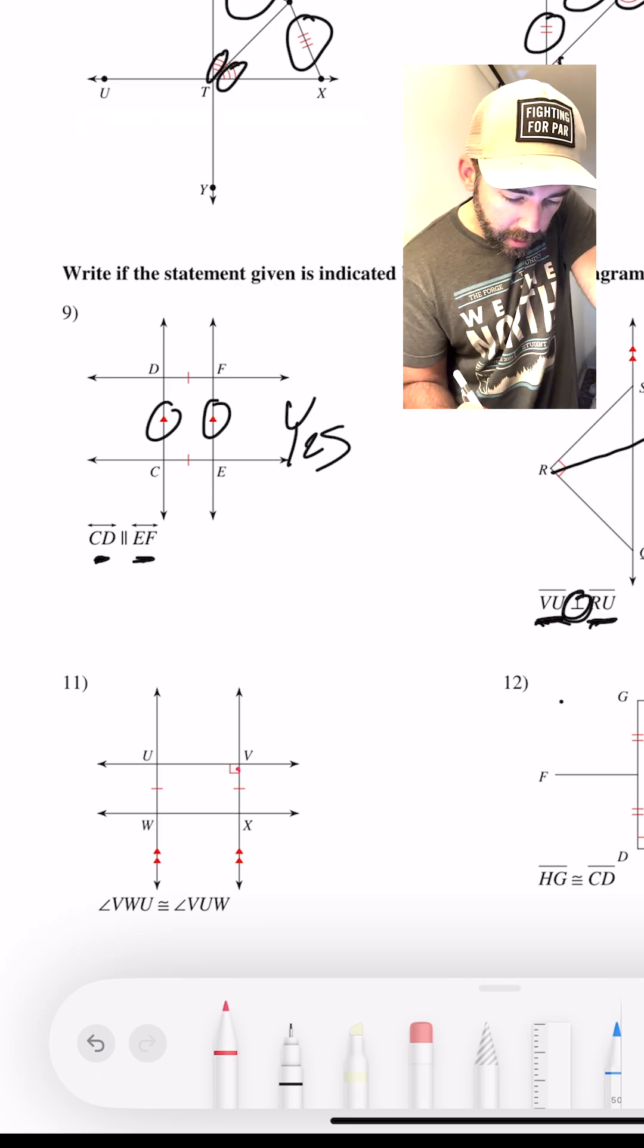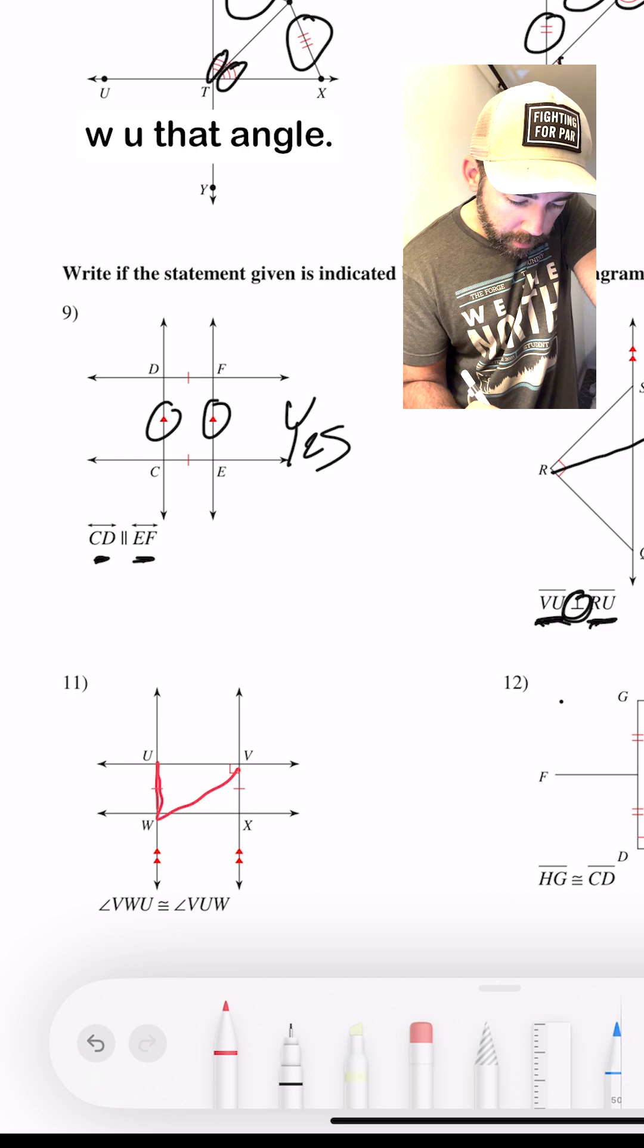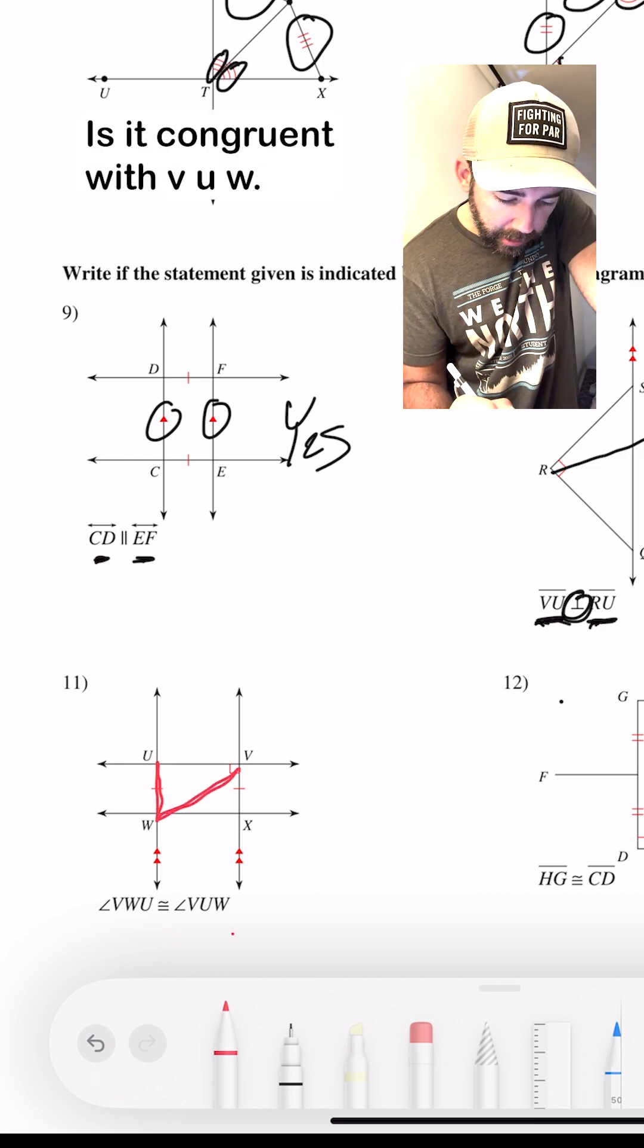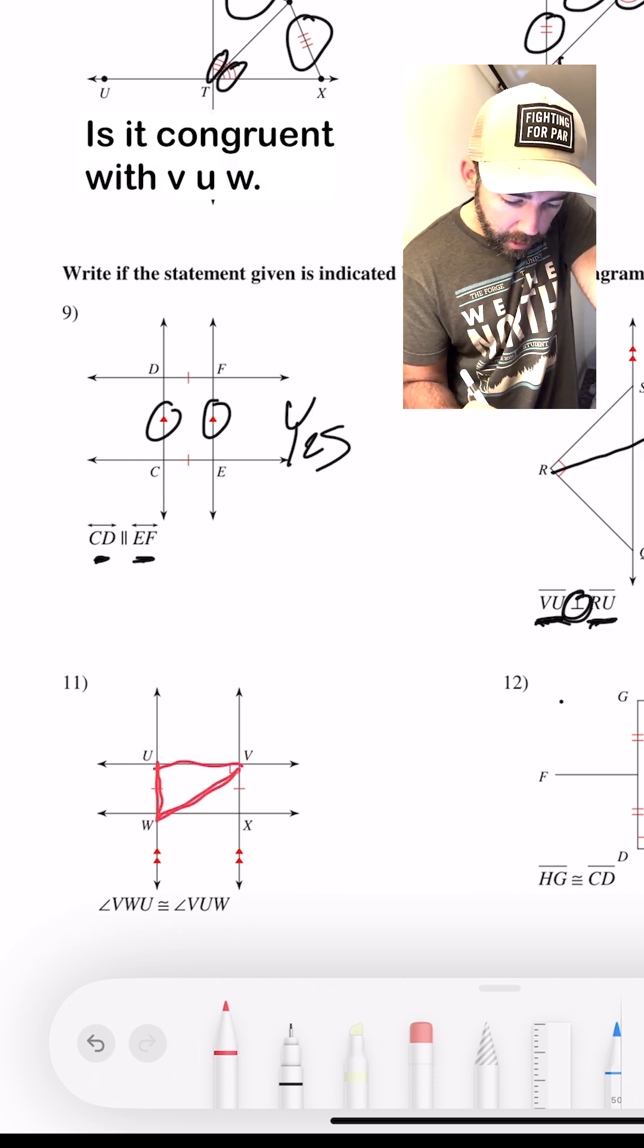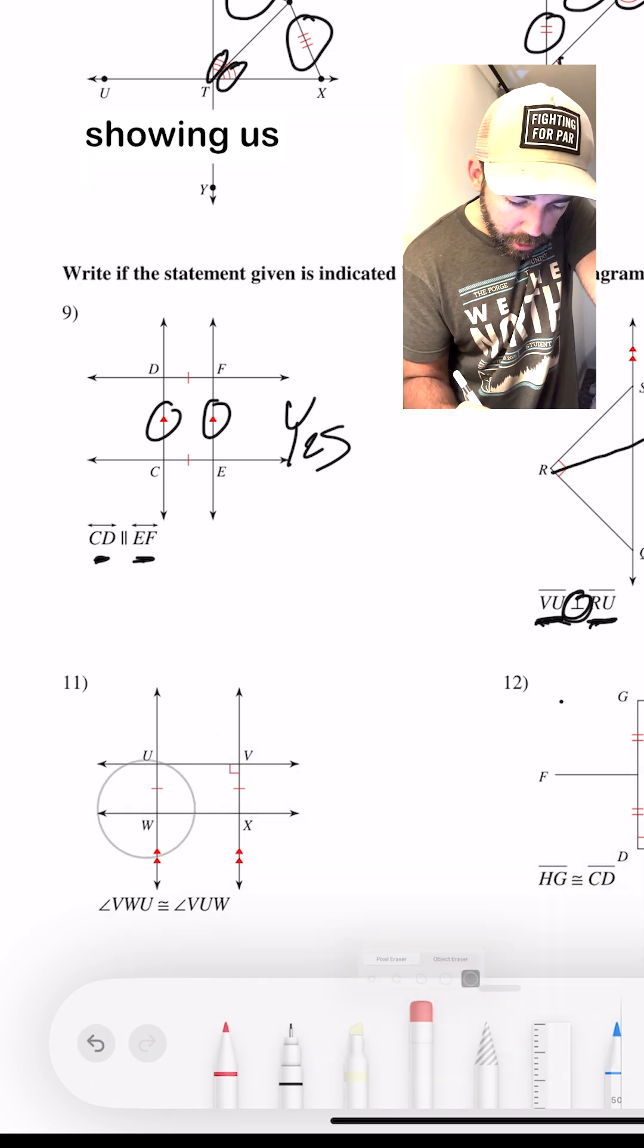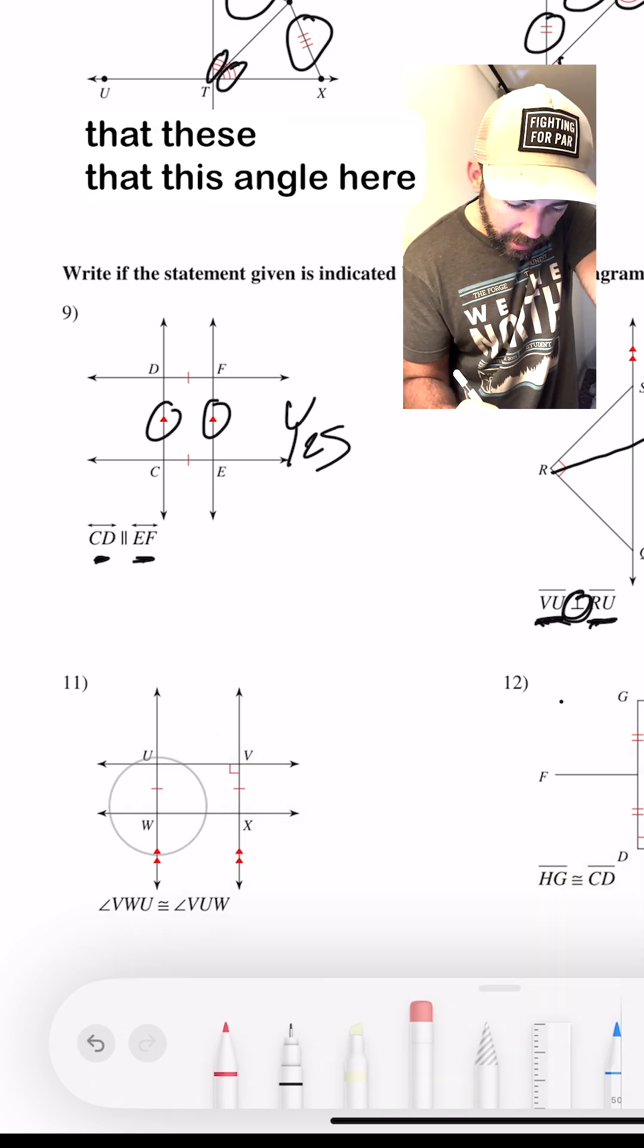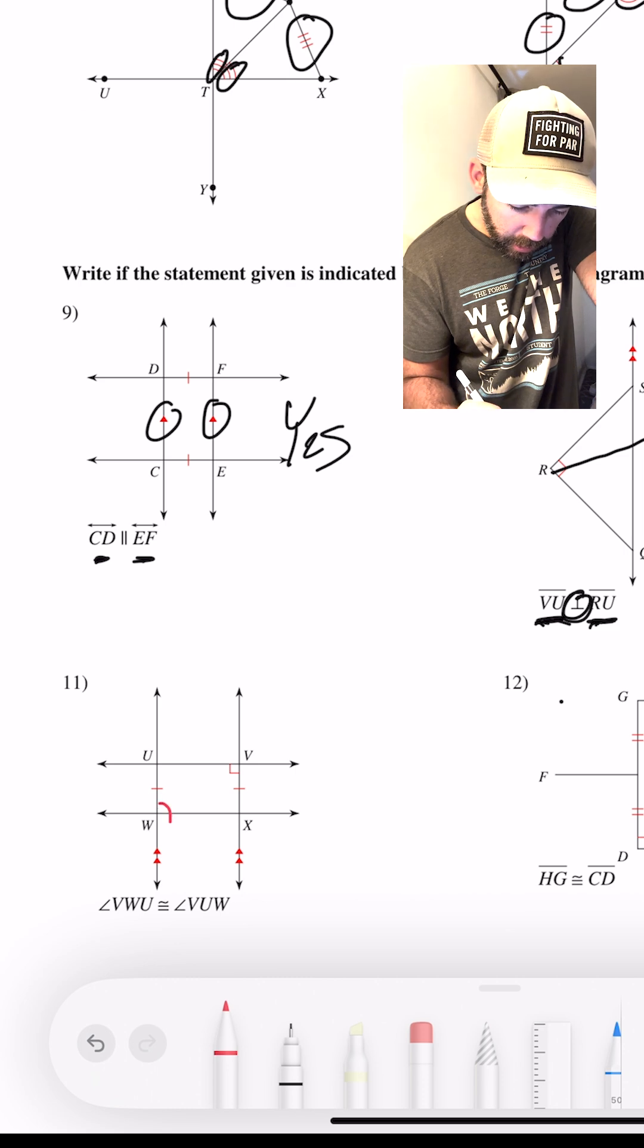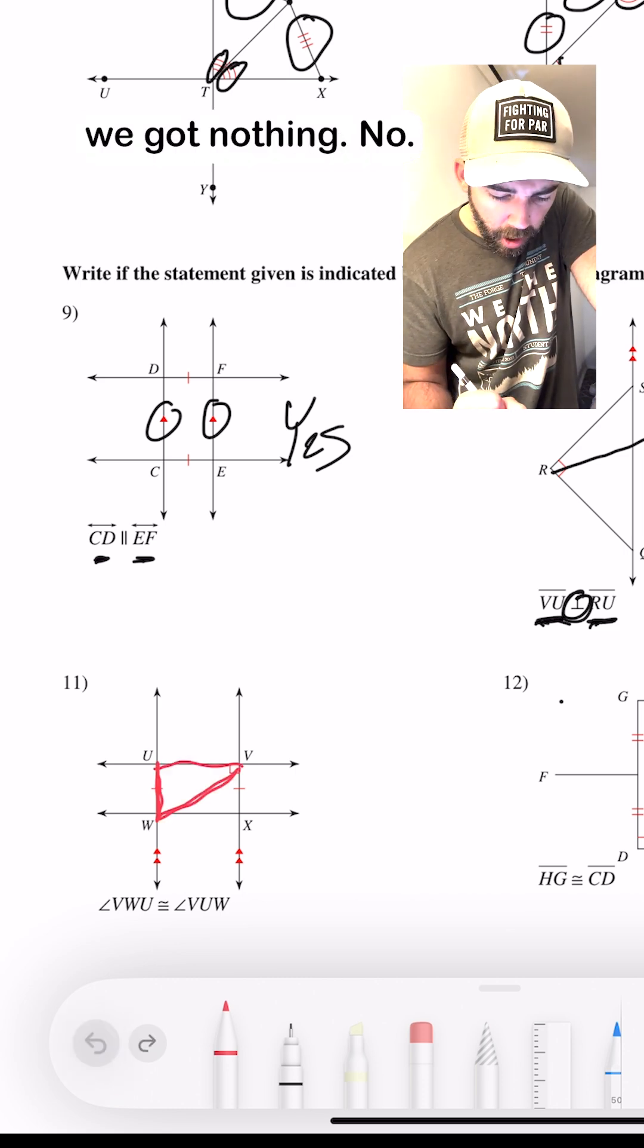Angle VWU. So VWU, that angle. Is it congruent with VUW? Well, do we have anything showing us that this angle here is congruent with that angle? We got nothing. No.